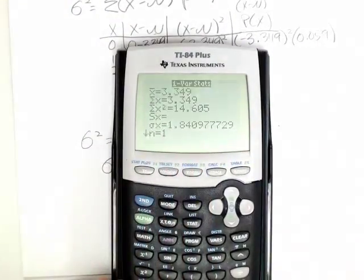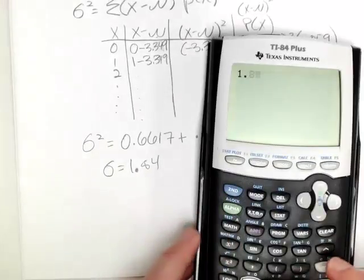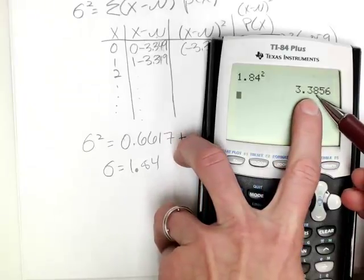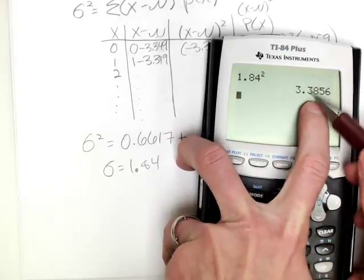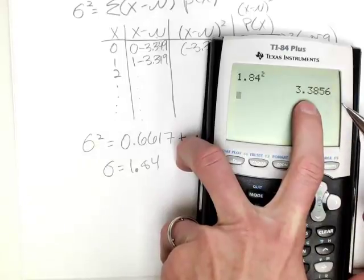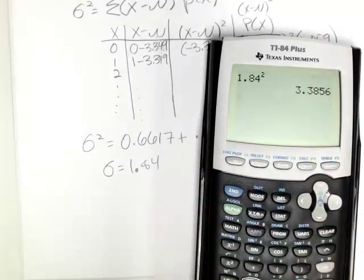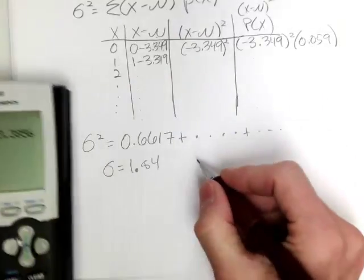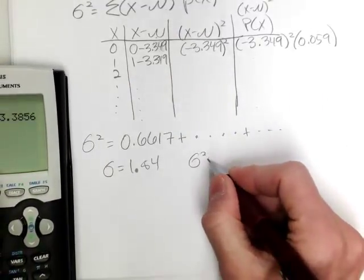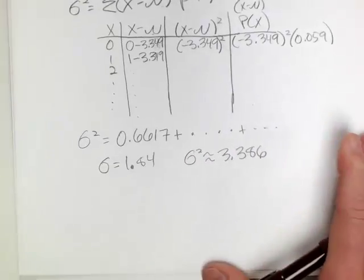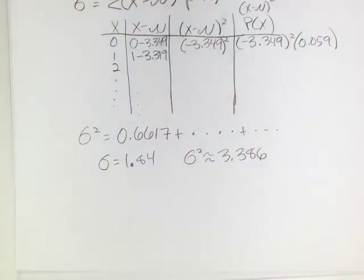So I'm going to go ahead and square this value here. So 1.84 squared is about 3.3856. Now, there's some rounding in there. It might be beneficial to have carried out that 1.84 a few more places, or as much as you can to get the answer to match in MyStatLab. So again, the variance is approximately 3.386. So I hope that helps you work through some of these problems, because I know it's very cumbersome to do these by hand.